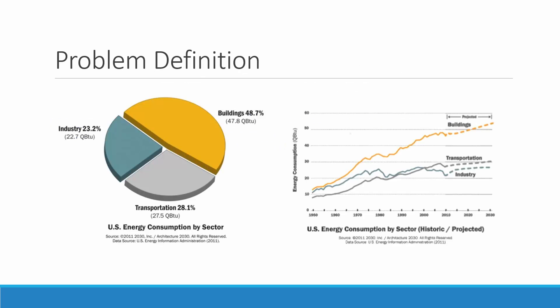Beginning with the actual problem for this project: 48% of most of the energy being used in the U.S. is from buildings. The point of this project is to essentially micromanage energy usage inside buildings to reduce energy waste.